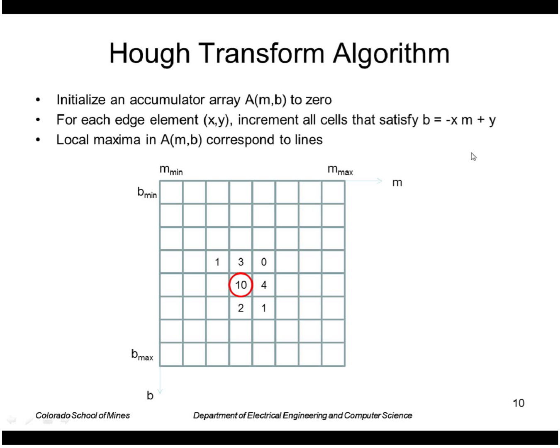And then we look for local maxima. For example, if we have these scores in the parameter array after our analysis, we would say this is a peak in that space, and the 10 means that 10 points voted for this particular line corresponding to this value of m and b.